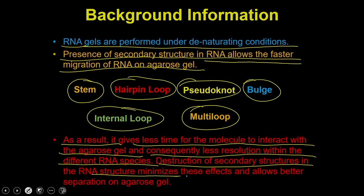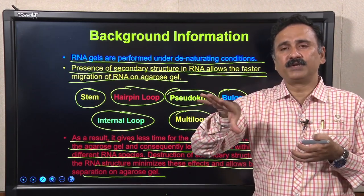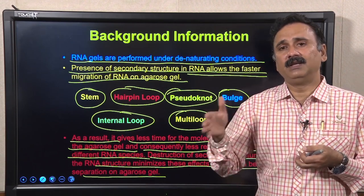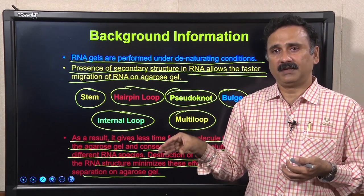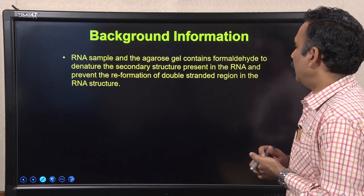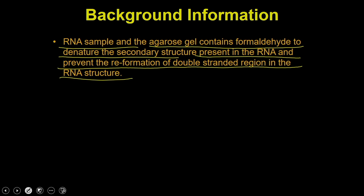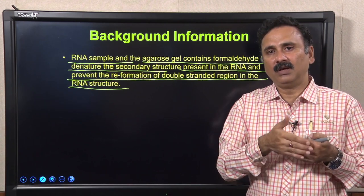These secondary structures are not good because they allow the RNA to run faster on the agarose gel. Running faster gives less time for the molecule to interact with the agarose gel, and consequently there is less resolution between different RNA species. Destruction of secondary structure minimizes these effects and allows better separation on the agarose gel. Because of secondary structure, the RNA becomes a very compact structure and runs very fast through the pores in the agarose gel, which has much bigger pore sizes compared to polyacrylamide gel electrophoresis.